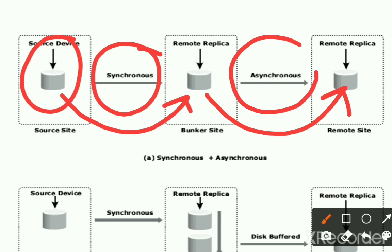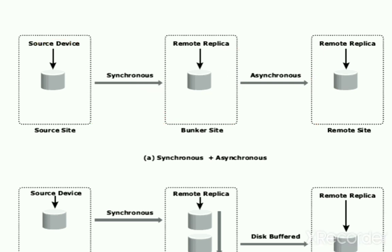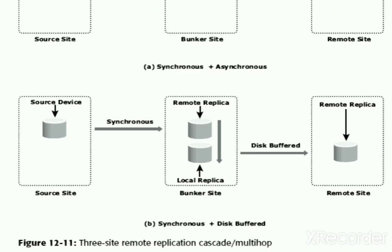If a disaster occurs at the source, production operations fail with zero or non-zero data loss. If a disaster occurs at the bunker site, the source site continues to operate without remote replication. In that case, the remote site must wait until all data is resumed before it can be updated. The next configuration is synchronous with disk-buffered.